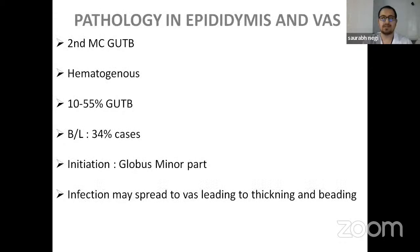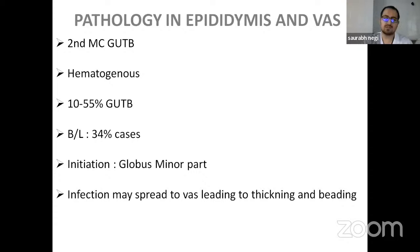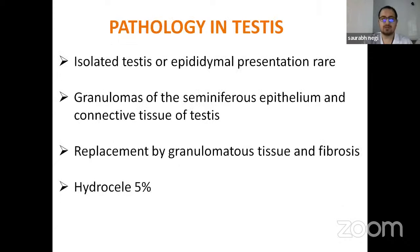Pathology in the epididymis and vas: second most common type of genitourinary TB, spreading by hematogenous route with incidence of 10 to 55% of GUTB. It can present bilaterally in 34% of cases. Initiation starts from the globus minor, which is the most vascular part. Infection can spread to the vas, leading to thickening and beading. Pathology in the testis: isolated testicular involvement or epididymal presentation is rare. Granulomas in the seminiferous epithelium and connective tissue replace the whole testicular tissue and lead to fibrosis. There may be hydrocele in 5% of cases.